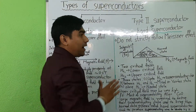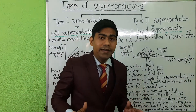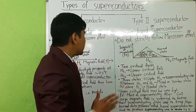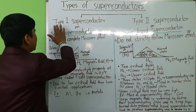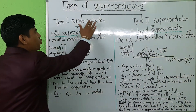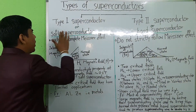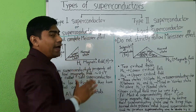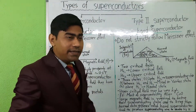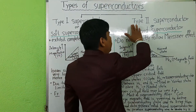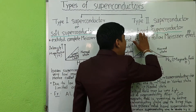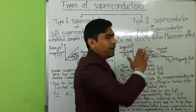Superconductors are classified into two categories. First is type 1 superconductor or soft superconductor, and second is type 2 superconductor or hard superconductor.